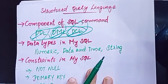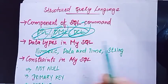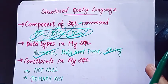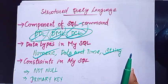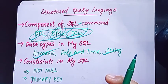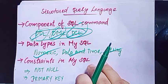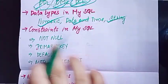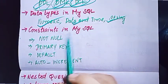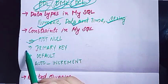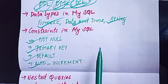Then, data types in MySQL. MySQL data types include numeric, date and time, and string types. Then, constraints in MySQL — MySQL constraints include primary key, default, and not null.